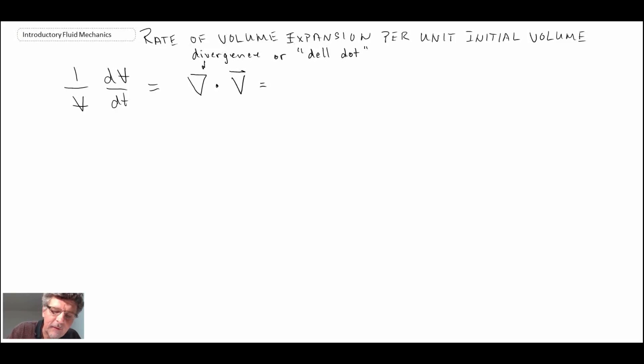We can write that out. Del dot is expressed in terms of partial derivatives of our three velocity components u, v, w.